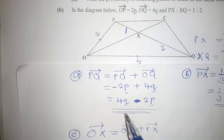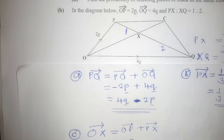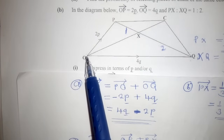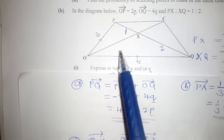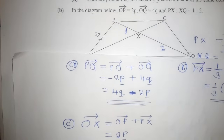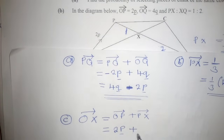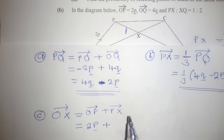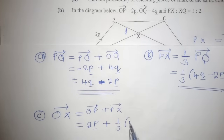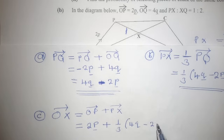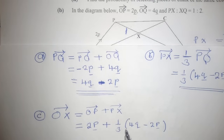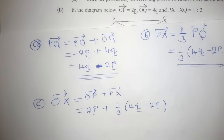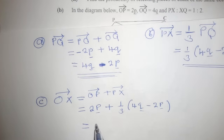What is OP? OP is here, it is 2p. This time we are not going to change the sign — it will remain as is because the vector is moving in the correct direction. Plus PX, which we just found as one-third of (4q minus 2p). So OX equals 2p plus one-third times (4q minus 2p).